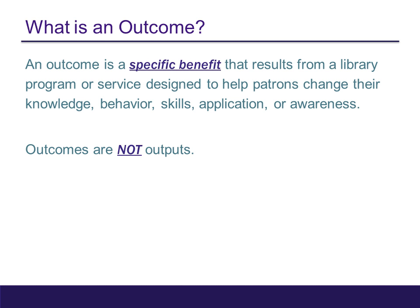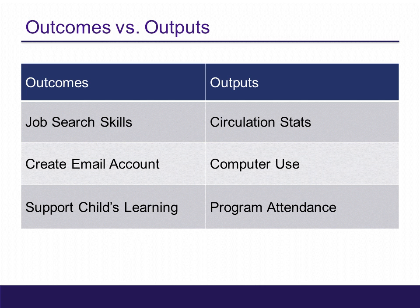For clarification, I want to take a minute to explain how Project Outcome defines the word 'outcome.' An outcome is a specific benefit that results from a library program or service designed to help patrons. Outcomes are not outputs. Some examples of outcomes include: a job seeker is more confident in their job search after meeting one-on-one with library staff; an elderly patron is able to create an email account after attending a class at the library; and after attending a library story time, a caregiver feels better able to support their child's literacy needs and growth.